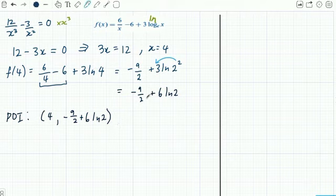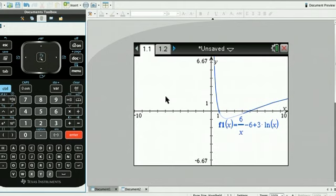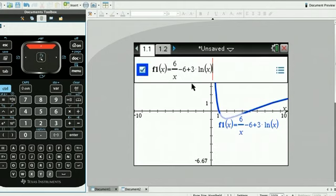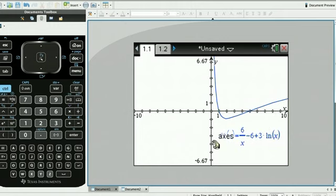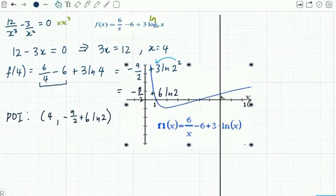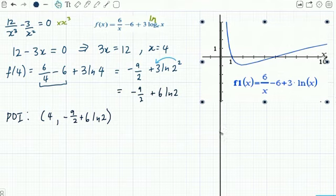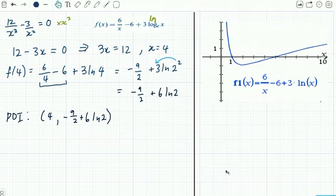Now to finish this off, we're going to graph this. I'm going to use the CAS. I've put the expression into my function line: 6/x - 6 + 3ln(x). You can see the graph that I get here. I'm going to copy that graph and put the main pieces of information into our document.